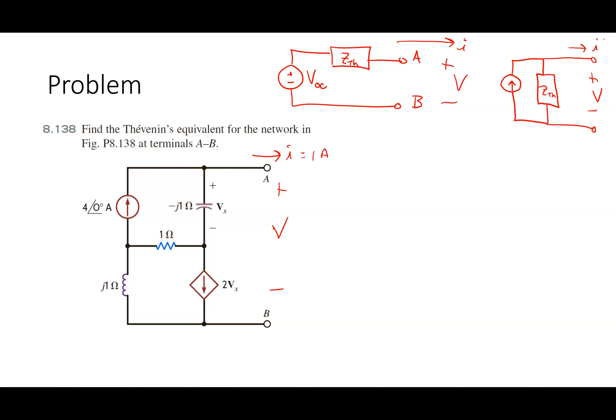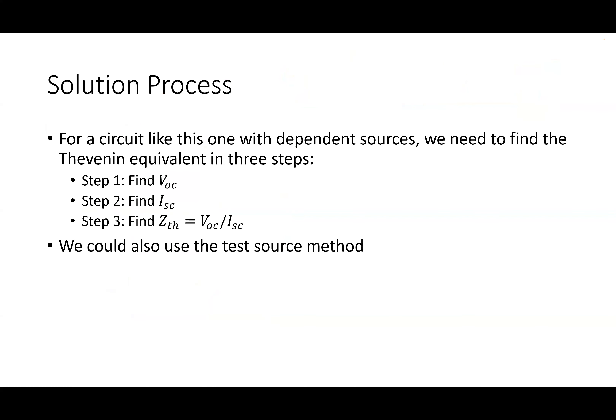There are two ways to find the Thevenin equivalent. The most common approach is to find Voc and find I_short-circuit, then compute Voc over Isc. The other approach uses a test source, but I'm not going to do that — let's focus on learning one method.